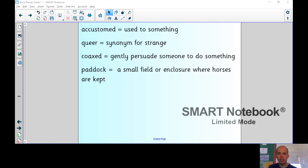Into this fine box the groom put me. It was clean, sweet, and I never was in a better box than that, and the sides were not so high, but that I could see all that went on through the iron rails that were at the top. He gave me some very nice oats. He patted me, spoke kindly, and then went away. When I had eaten my corn, I looked around. In the stall next of mine stood a little fat gray pony with a thick mane and a tail, a very pretty head, and a pert little nose. I put my head up to the iron rails at the top of my box and said, how do you do? What is your name? He turned round as far as his halter would allow, held up his head and said, my name is Merry Legs. I am very handsome. I carry the young ladies on my back, and sometimes I take our mistress out in the low. They think a great deal of me, and so does James. Are you going to live next door to me, in the box? I said yes. Well then, he said, I hope you are good-tempered. I do not like anyone next door who bites.